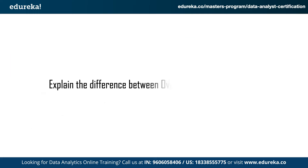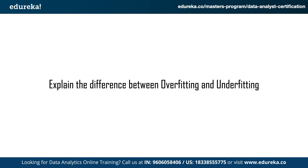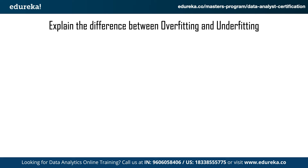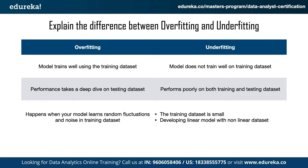The next question is: explain the difference between overfitting and underfitting. Your model is overfitting when it trains well on the training data set but the performance drops drastically in the testing data set — this happens when your model learns random fluctuations and noise from your training data. Underfitting occurs when your model does not really train well on the training data set and performs poorly on both training and testing data sets. This occurs when your training data set is too small or when you develop a linear model with a non-linear data set.